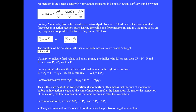Newton's third law is the statement that forces occur in action-reaction pairs. During the collision of two masses m1 and m2, the force of m1 on m2 is equal and opposite to the force of m2 on m1. We have F1 equals minus F2, or delta-p1 over delta-t equals minus delta-p2 over delta-t. The duration of the collision is the same for both masses, so we cancel delta-t to get delta-p1 equals minus delta-p2, where delta is final minus initial value.